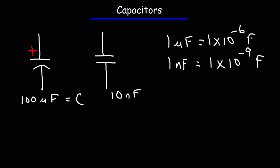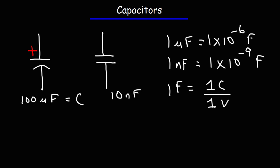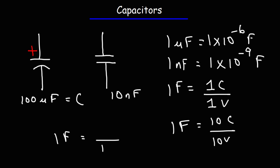Now let's spend some time talking about the unit of capacitance — the farad. The farad basically tells you the ratio of charge to voltage. A 1 farad capacitor can store 1 coulomb of charge when it's charged up by 1 volt. If you charge it to 10 volts, it holds 10 coulombs. At 100 volts, it holds 100 coulombs. So the farad tells you how much charge the capacitor can hold per unit of voltage, or per 1 volt.